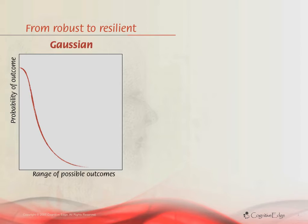I've shown one half of a bell curve here. The basic idea is I plot all the things which can happen — ideal probability assessments — and anything which falls within the bell curve I should be expected to manage for.